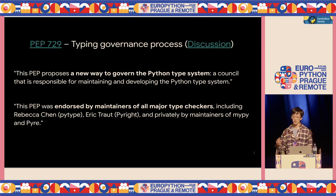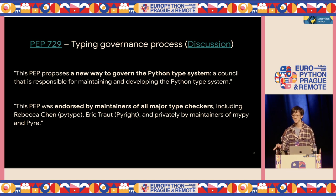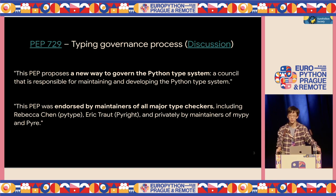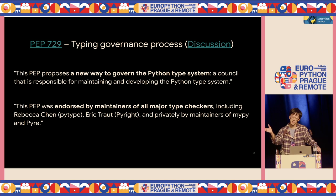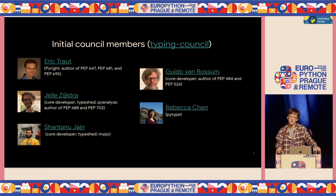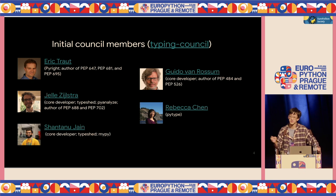PEP 729 — if you check it, originally there's a thread, a discussion, a very short one. People are basically saying thanks for consolidating all the things we already discussed somewhere offline. What this PEP does is simply provide a new way to govern the Python type system. A part I'd like you to notice is that this PEP was endorsed by maintainers of all major type checkers. The initial members include Guido and other type-related Python developers.